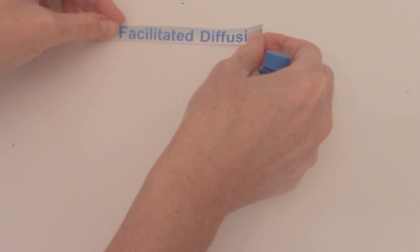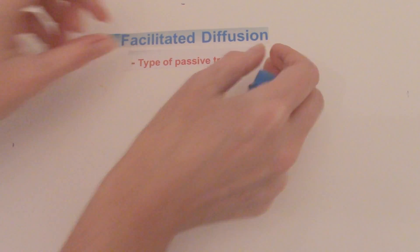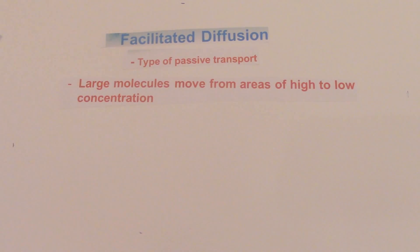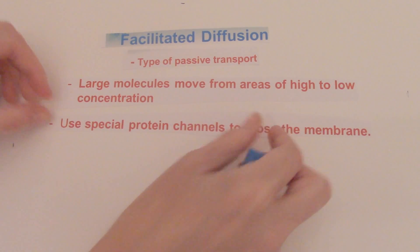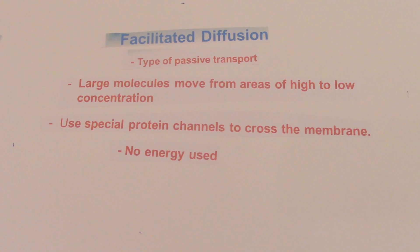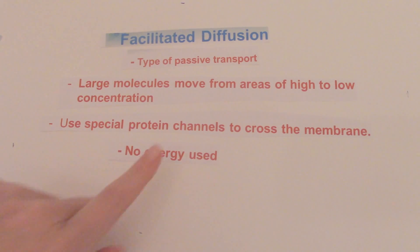The next type of passive transport is facilitated diffusion. Facilitated diffusion is a type of passive transport. It moves large molecules from areas of high to low concentration. Because it's moving larger molecules, it has to use special protein channels so that the larger molecules can cross the membrane. It is passive transport, so no energy is used. A memory clue: someone who facilitates is there to help, so these protein channels are helpers — they help the molecules move across the membrane.